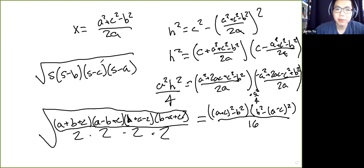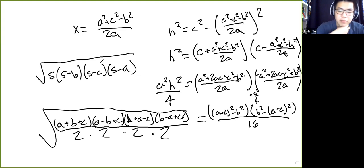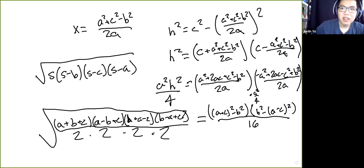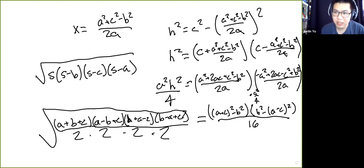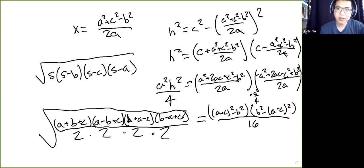So as a result of all that work, we're done with Heron's formula. I'm assuming you haven't gone through this every time you use it. I just want you to realize that there's all this working in the background every time you use Heron's formula — it's not exactly a trivial result. You're wielding a lot of power when you use it.